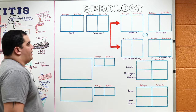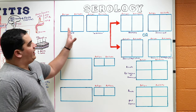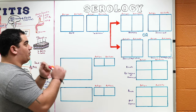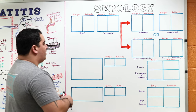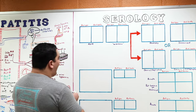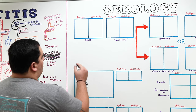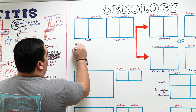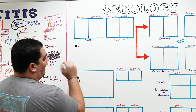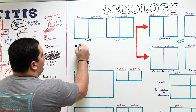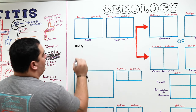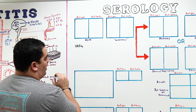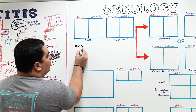Before we start getting into the hepatitis B virus serology, I want to give you a couple of terms to pave the way. With the hepatitis B virus, it has different types of antigens. On the surface of the virus — on that envelope — there is a specific antigen called the surface antigen, right on that envelope. That is called the hepatitis B virus surface antigen.